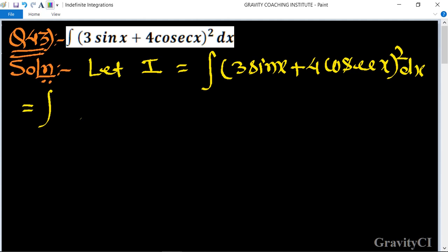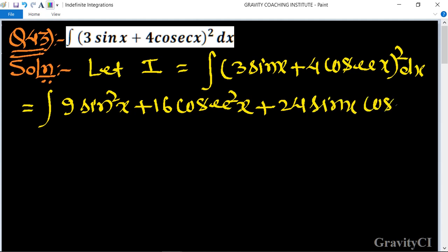(a + b) whole square identity. If we use this, then 9 sin² x + 16 cos² x + 24 sin x cos x dx. So this is equal to integration...